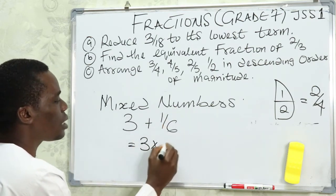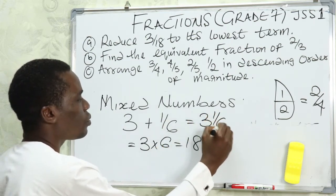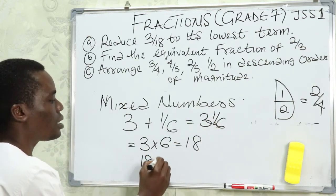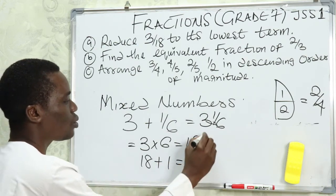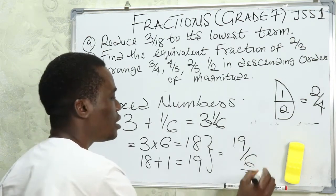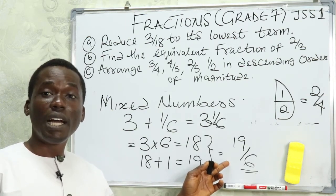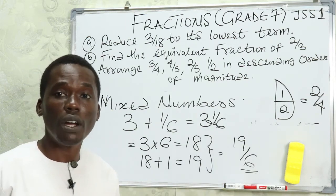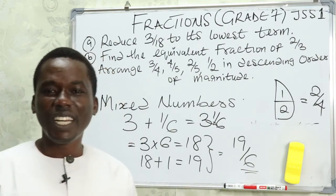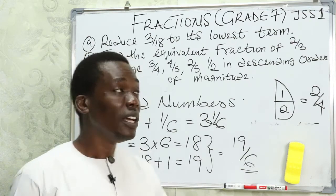To convert a mixed number — for example, 3 and 1 over 6 — we multiply 3 times 6 to get 18, then add the numerator 1 to get 19. So the result is 19 over 6. Notice that the numerator is greater than the denominator, which is why a mixed number always gives you an improper fraction. So questions on fractions can be very easy!